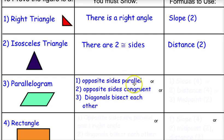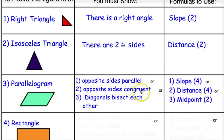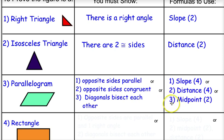To show opposite sides are parallel, I'd use the slope formula four times, since parallel means the same slope. To show opposite sides are congruent, I'd use the distance formula four times. Or I can show the diagonals bisect each other using the midpoint formula twice — that's actually the easiest method, though you do have to be careful. Between slope and distance, slope formula four times is preferable to distance formula four times.